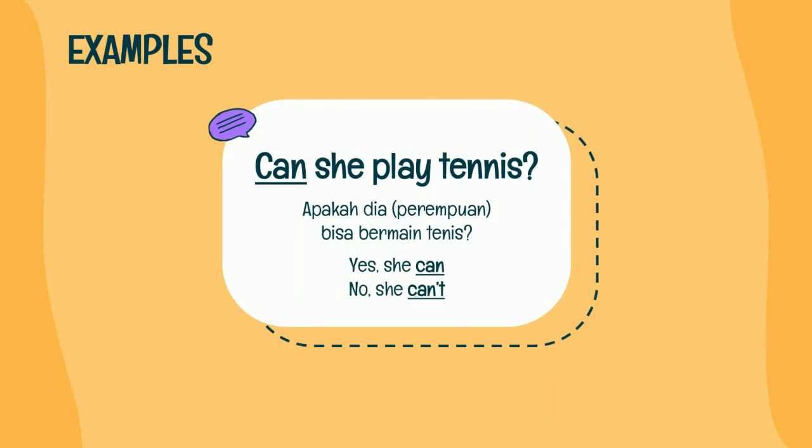Contoh selanjutnya: Can she play tennis? Can di sini sebagai verb, she sebagai subject, play tennis sebagai object. Artinya: apakah dia bisa bermain tennis? Kalau dia bisa, jawab: Yes, she can. Kalau tidak bisa, jawab: No, she can't.